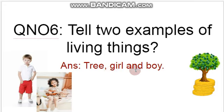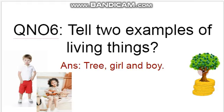Tree, girl, and boy. Understand? A girl also breathes — she is a human, she breathes. A boy also breathes. And a tree also breathes. So these are three examples. You can also give other examples of living things, like butterfly, sparrow, frog, elephant — you can name any animal, because animals are also living things.